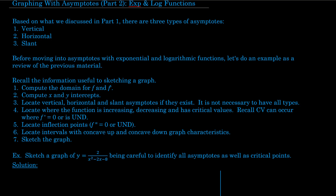The next thing is to find inflection points, which occur where the second derivative is 0 or undefined. Then locate the intervals where the function is concave up and concave down. A critical value is just the x-value; a critical point has both x and y values to give a coordinate. When you put all this information together, you get a really decent graph of the function.